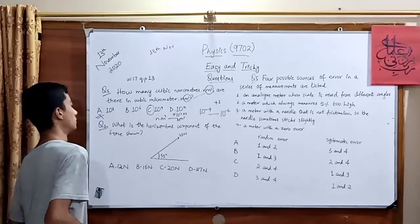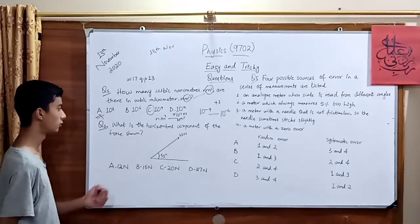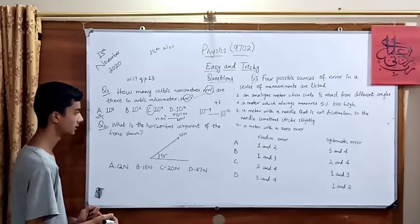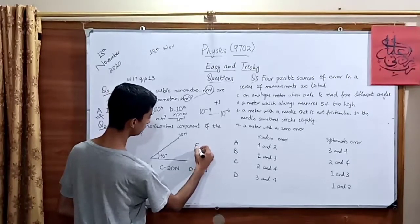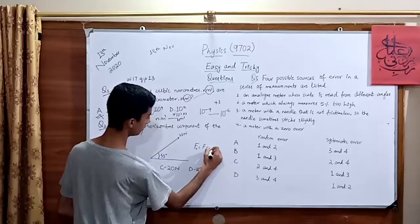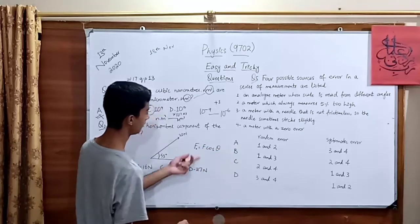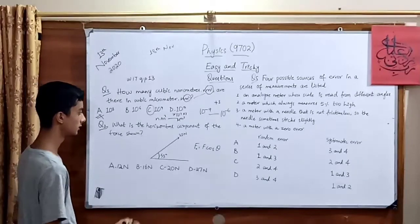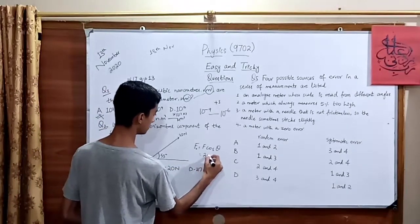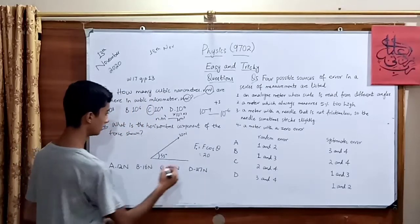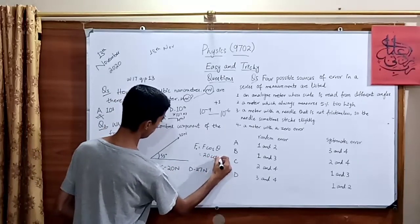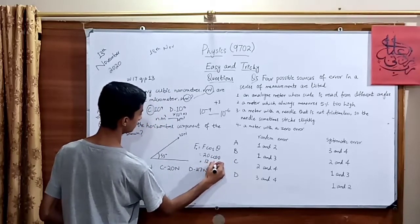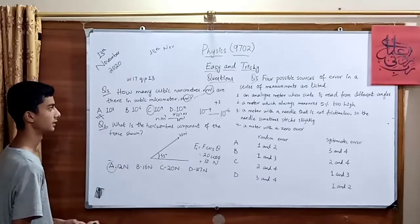Now for question number 2, we are asked what is the horizontal component of the force shown. That is quite easy because we just need to remember Fx equals F cos theta. Fx is basically the horizontal component of that force which is 20 newtons. So 20 should be written there, and cos theta written there. So we are getting the 12 point something newton answer. So A is the right answer in this question.